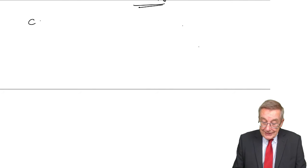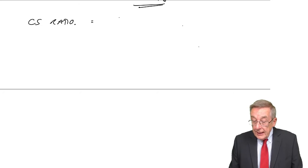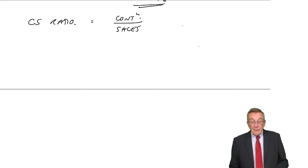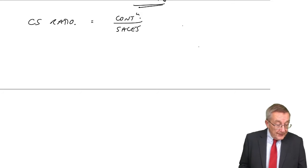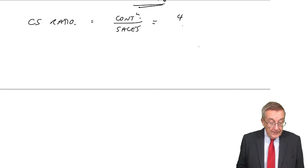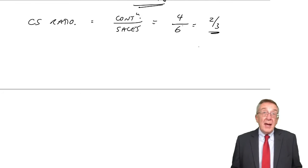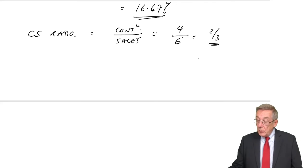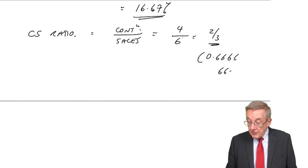Over the page, something that's quite popular, the CS ratio. And what the CS stands for is contribution and sales. So it's the contribution divided by the sales. And so, in this case, what's the contribution? The contribution per unit was $4. The selling price per unit was $6. 2 over 3. By all means, write it as a decimal. Write it as a decimal or a percent if you want. It's 0.6666666 or 66.666%. Doesn't matter.